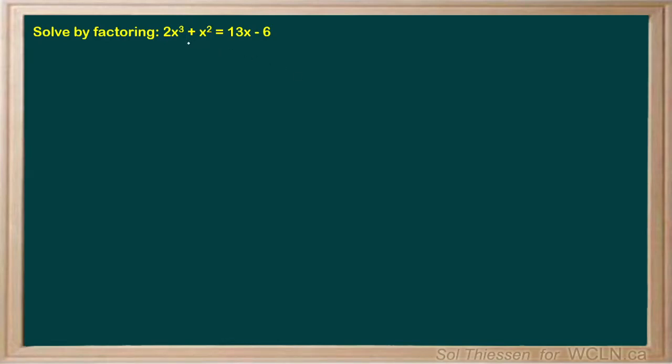Solve by factoring. We have 2x cubed plus x squared equals 13x minus 6.